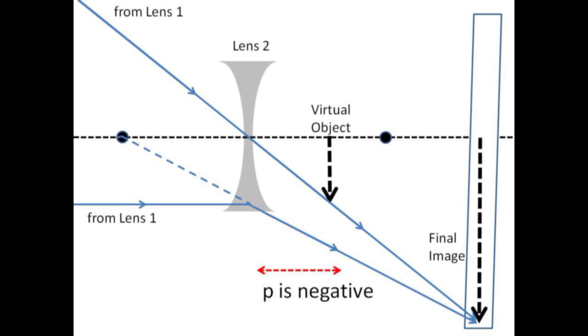Consider a second ray coming from the first lens and heading toward the virtual object through the center of the diverging lens.